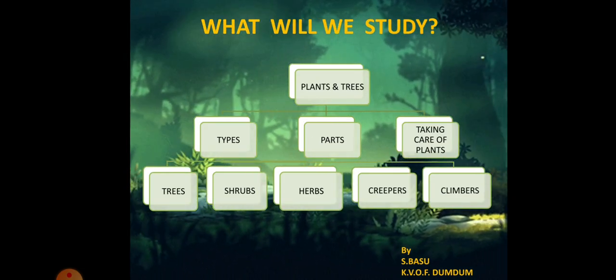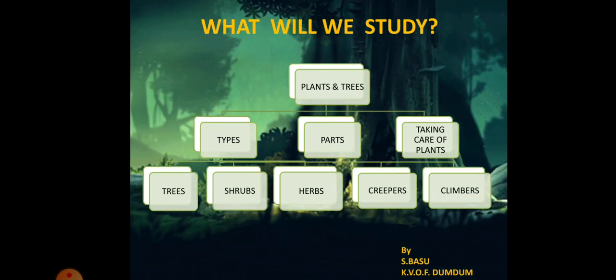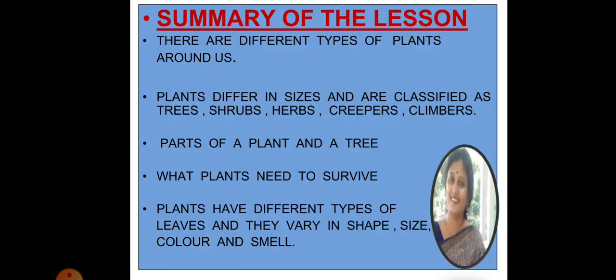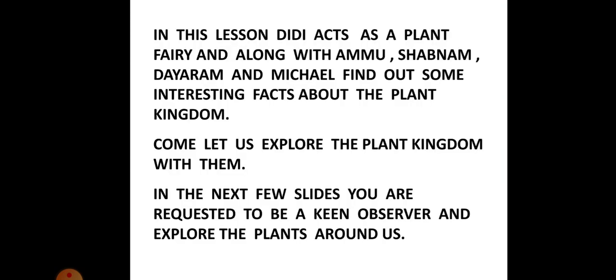In the types, we will be dealing with the trees, the shrubs, herbs, creepers and climbers. The summary of the lesson: There are different types of plants around us. Plants differ in sizes and are classified as trees, shrubs, herbs, creepers and climbers. Parts of a plant and a tree will be dealt with. What plants need to survive? Plants have different types of leaves and they vary in shape, size, color and smell.